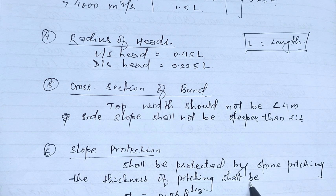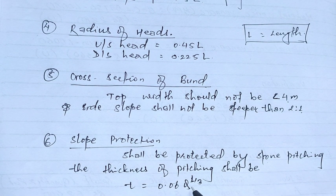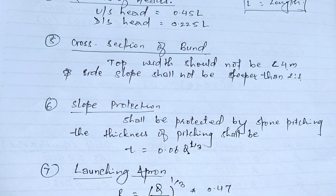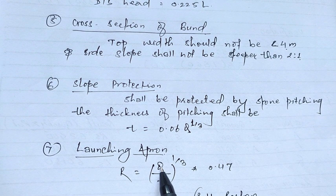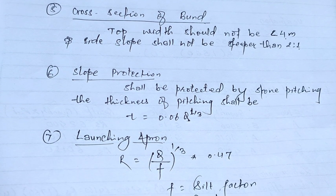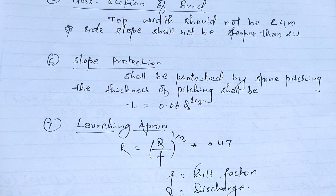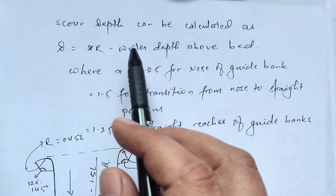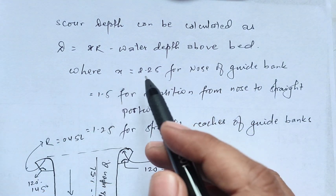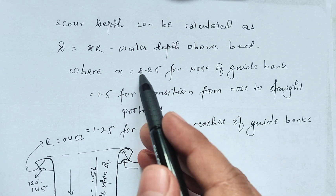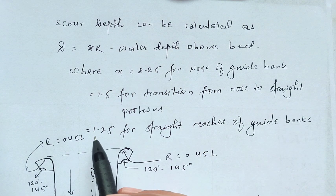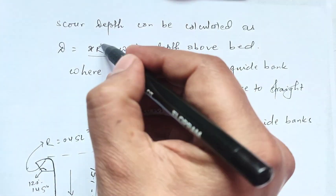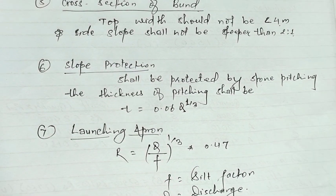In the sixth step, slope protection shall be done by stone pitching. The thickness of pitching is determined using: T equals 0.06 times Q to the power of one-third. In the seventh and final step, the launching apron is calculated using: R equals 0.47 times (Q/f) to the power of one-third, where f equals shield factor. The scour depth D equals xR minus water depth above bed level, where x equals 2.25 for the nose of the guide bank, 1.5 for transition from nose to straight portion, and 1.25 for straight reaches.